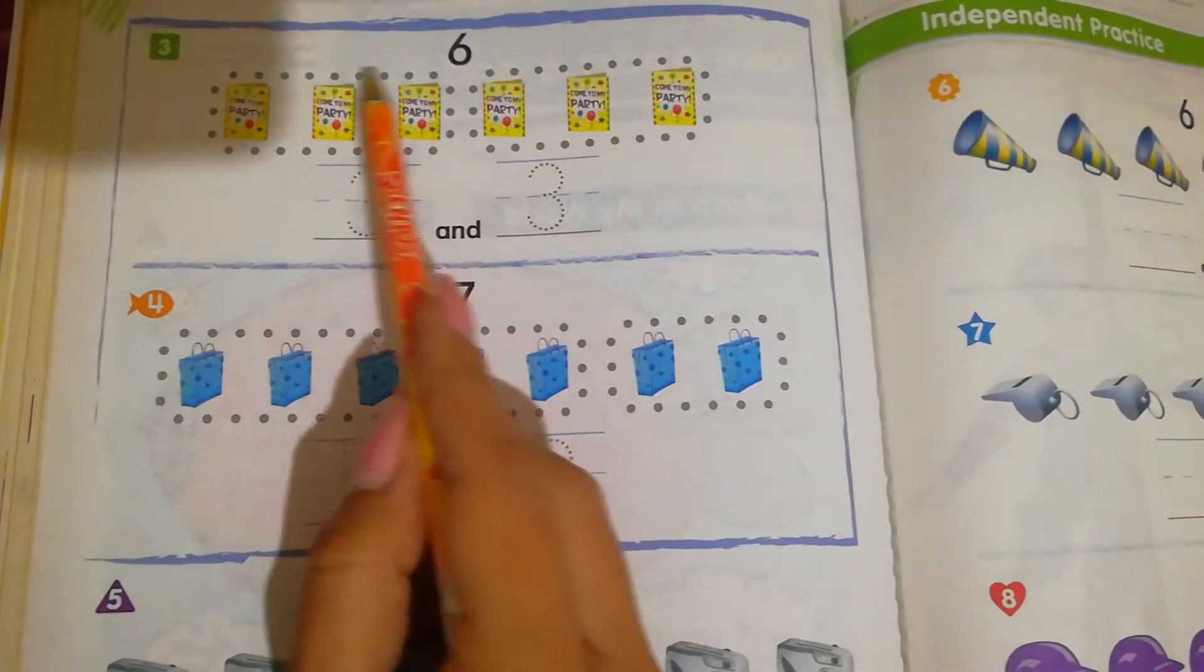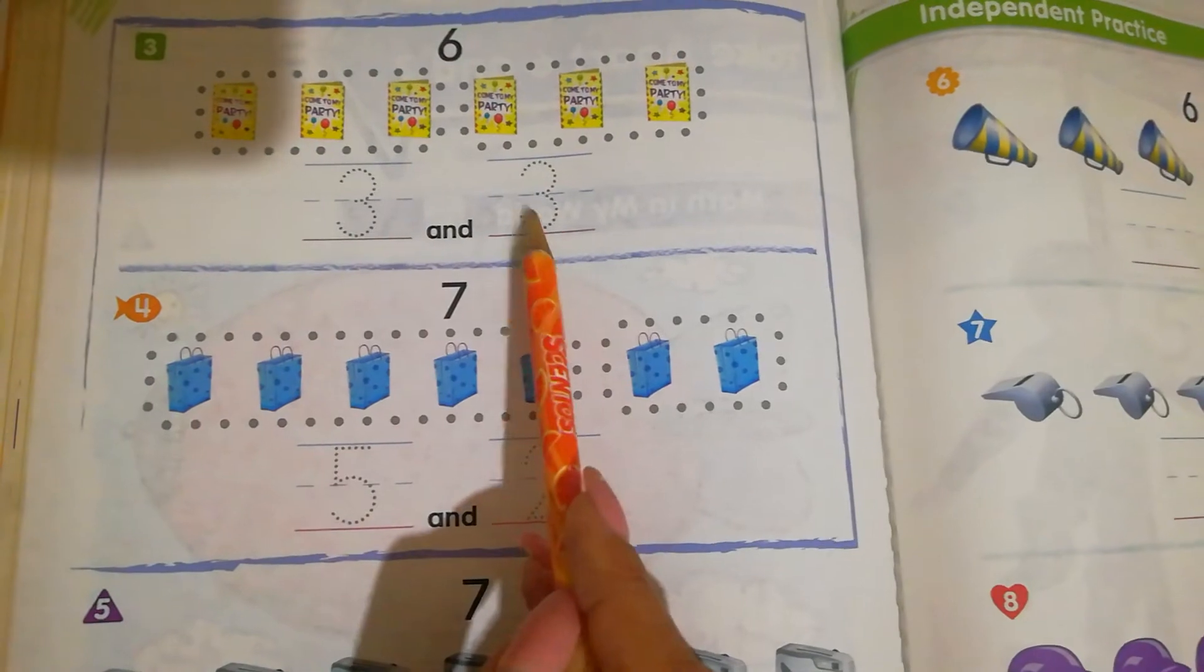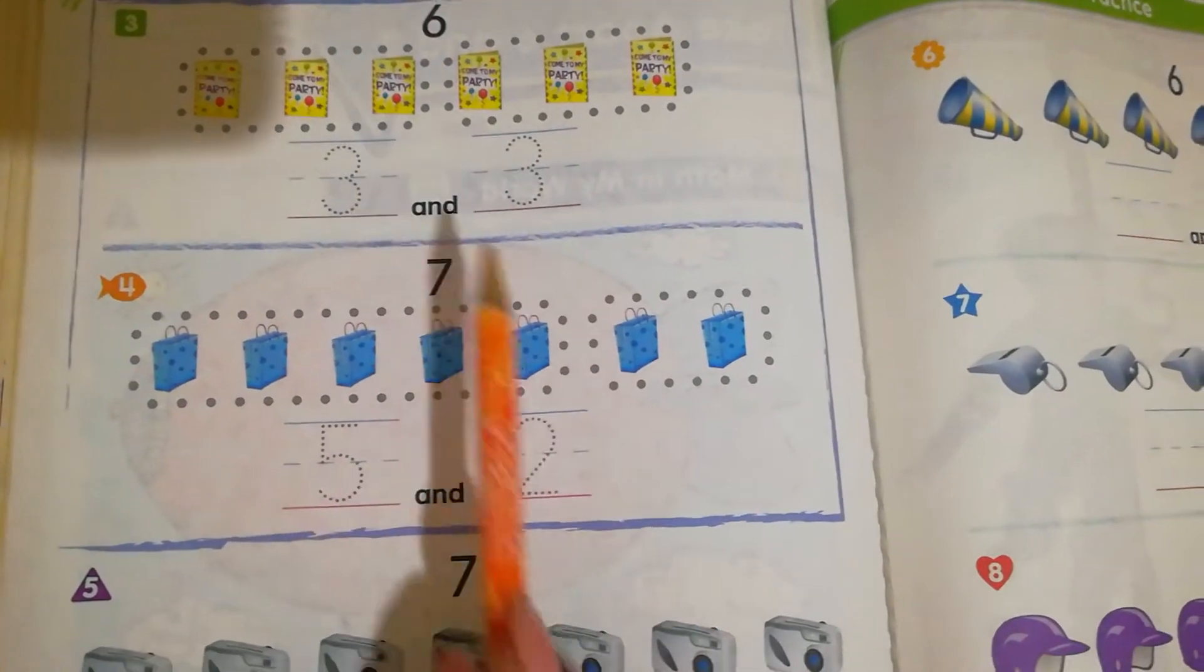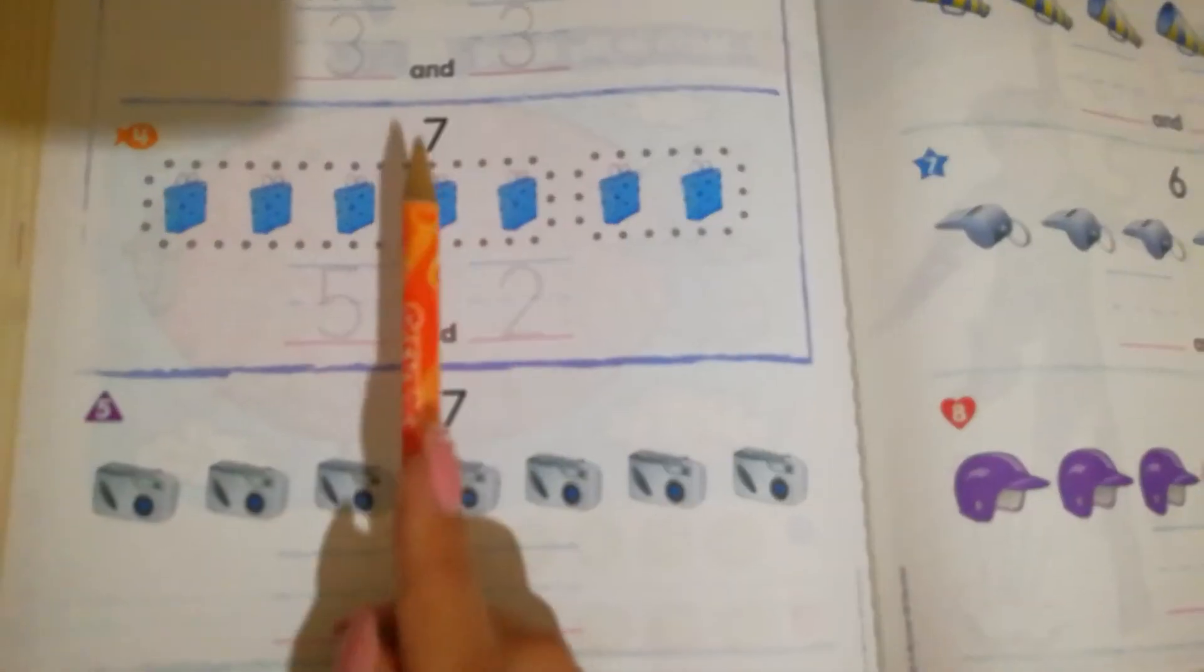We circle the groups, then write the number. Here it's already done so we trace it. Let's move to seven.